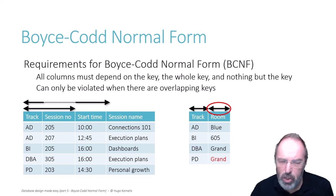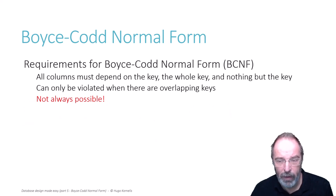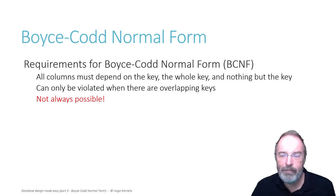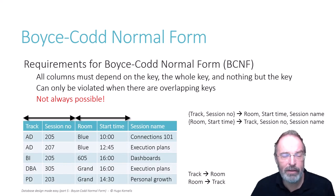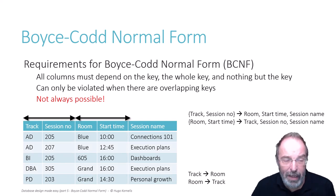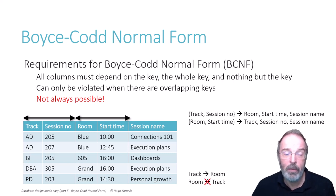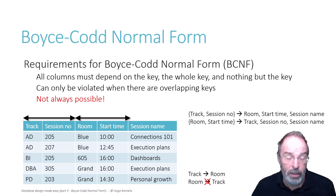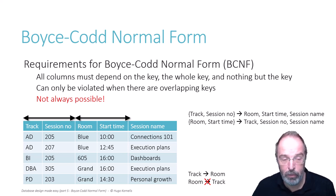However, sometimes Boyce-Codd Normal Form is impossible to achieve. Those cases are rare, but they do exist. Let's return to the same example we had just before, but now the additional business rules are slightly different. Track still determines room, but room no longer determines track. We had to scale down — we only have three rooms available but we still have four tracks. So we had to combine tracks DBA and PD into a single room, which means we no longer have a functional dependency where room determines track.